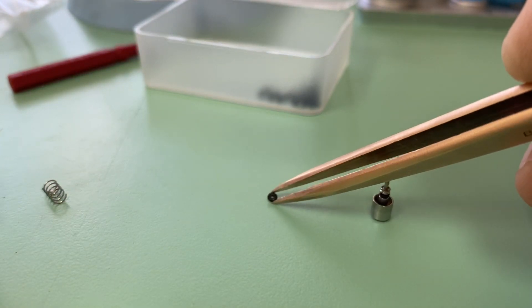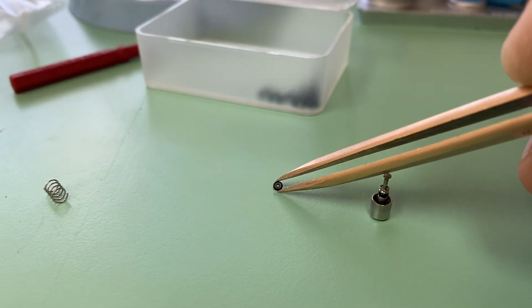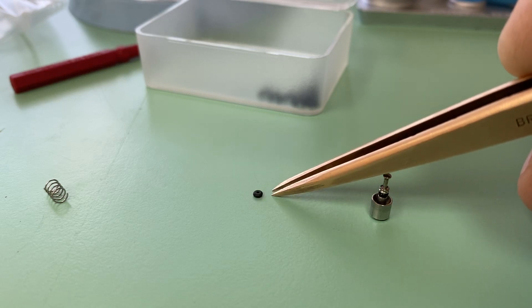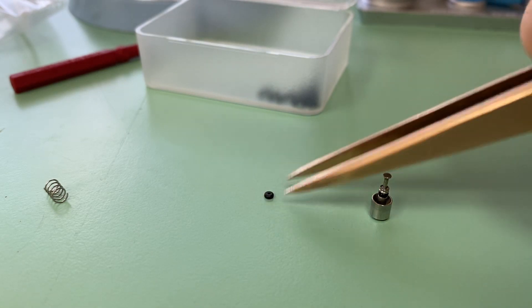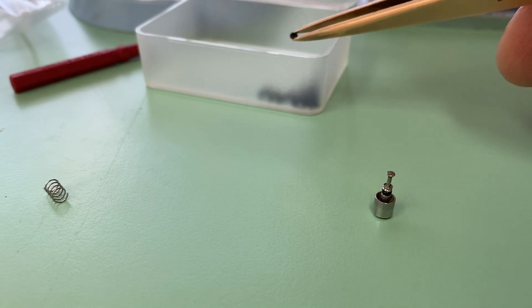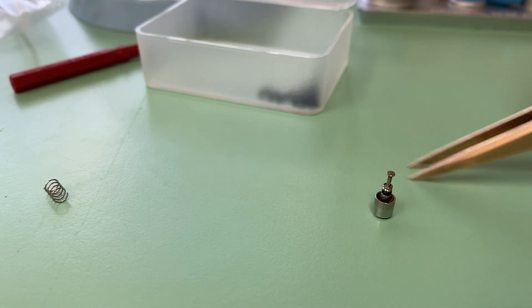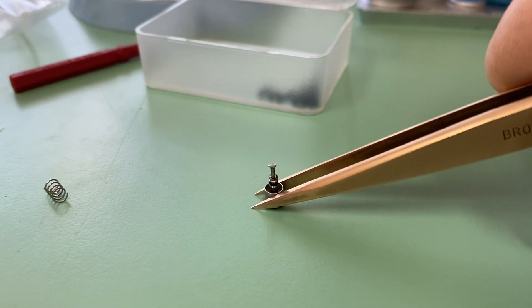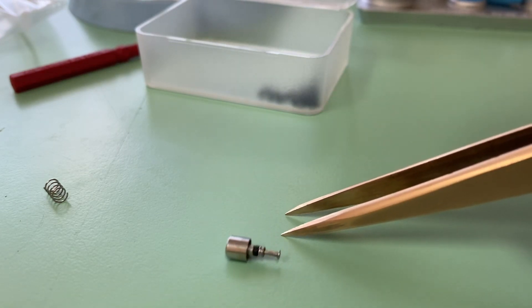So it's really important when we're overhauling these Seikos, with these vintage chronographs, to get the correct D-shaped gasket, because that really helps us with waterproofing, and it really helps us with making sure that we have a nice fluid action when starting and stopping the chronograph.